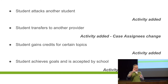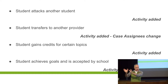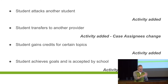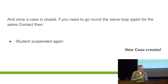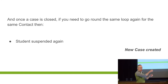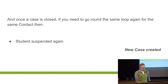Student attacks another student — activity added. Student transfers to another provider because they didn't fit with the military — activity added, case assignee is changed. Student gains credits for certain topics — activity. Once the case is closed, if it didn't work and the student is out again, you open a new case. You've got the whole previous case there with all of that information, closed and locked. Start a new case — that's good.